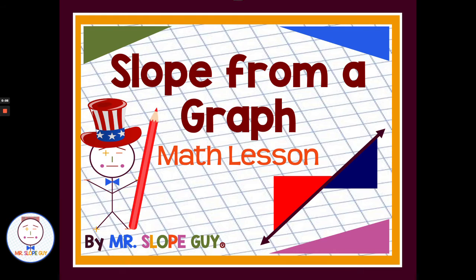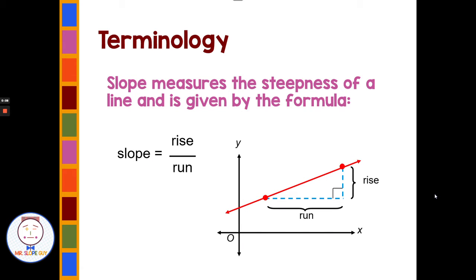Slope measures the steepness of a line and is given by the formula rise over run. In its most basic form, slope is the ratio of the rise — the change on the y-axis, going up or down — compared to the run, which is the change on the x-axis, going left to right. We have rise over run as our ratio.